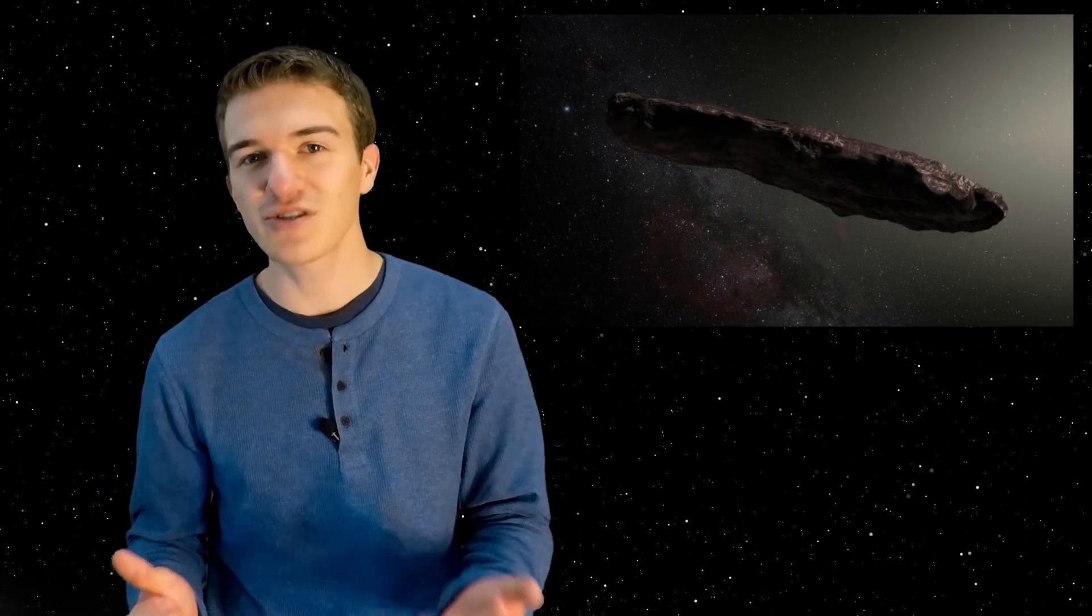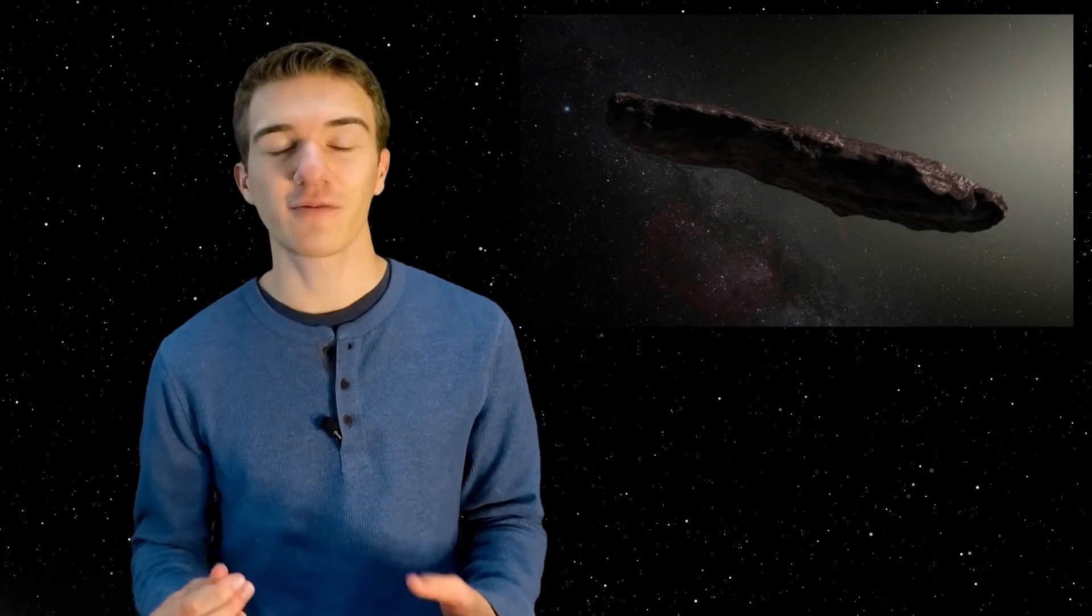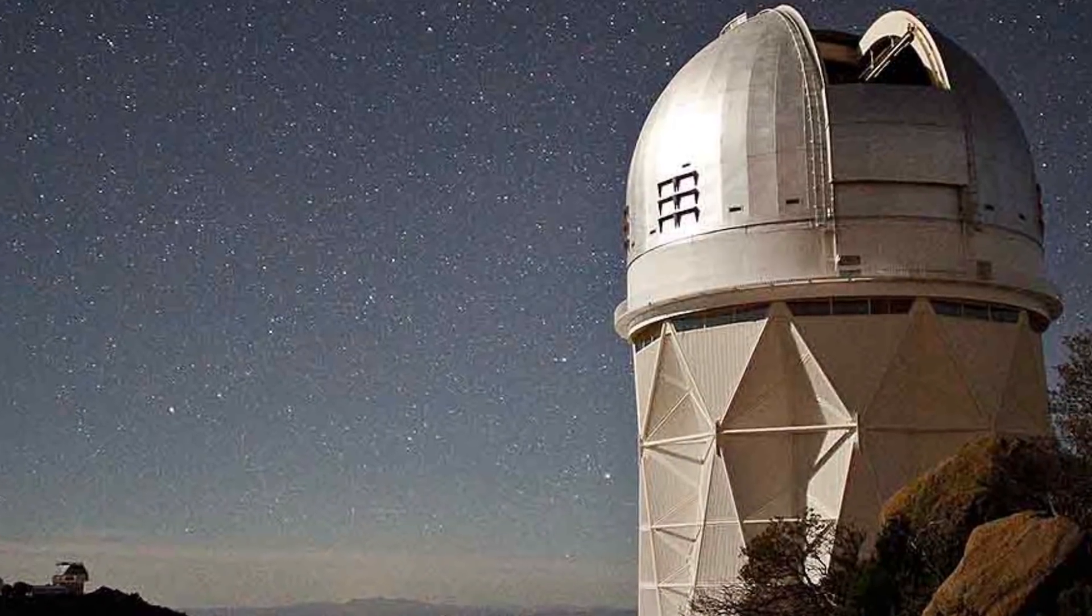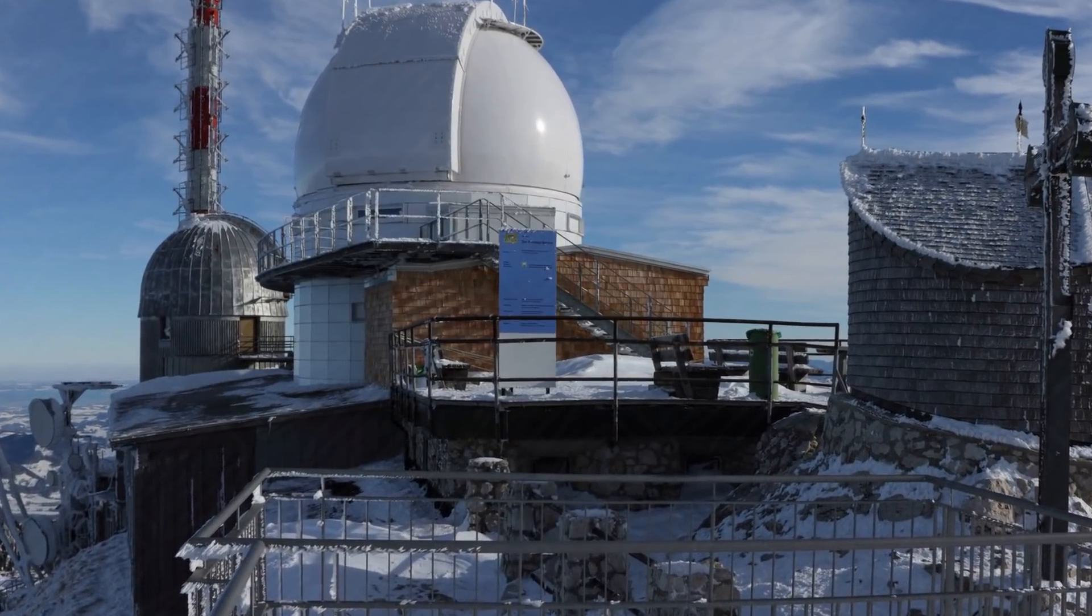Now, it can be fairly difficult to actually observe one of these objects. I mean, usually when you see on the news, you see pictures like this, but that's just an artist's rendition. In fact, what the actual astronomers are looking at is more like this, just a really small dot flying through the sky. And actually, one of the very first things they wanted to predict was the size of it. So they had various observatories all throughout the world try and looking at this object to see what brightness they get.